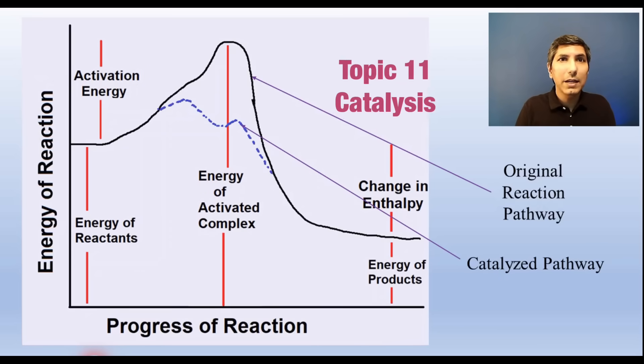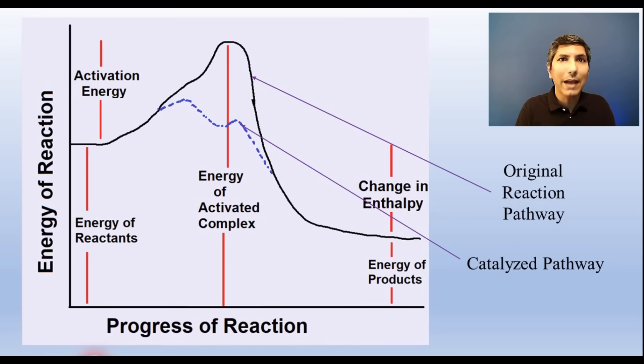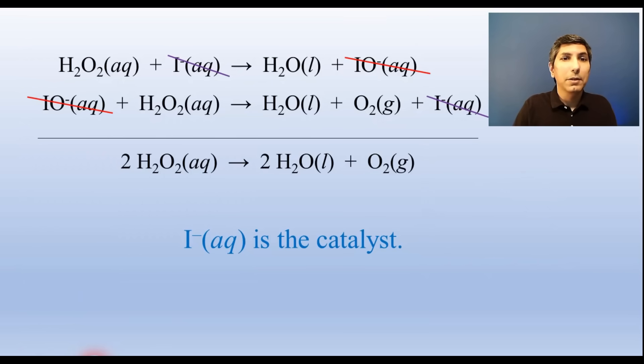A catalyst speeds up a reaction without being used up. It does this by lowering the activation energy of the reaction, and often it also increases the number of collisions that lead to a reaction. Most commonly, a catalyst will be present at the beginning of a reaction, and it will participate in an early step, likely get bound into a reaction intermediate, but then that intermediate reacts again and spits out the catalyst molecule again, just like we see in this mechanism. Other catalysts work differently. They're called surface catalysts, and they allow a reacting molecule to form a bond with the surface of the catalyst.